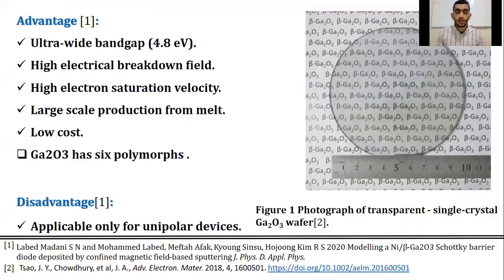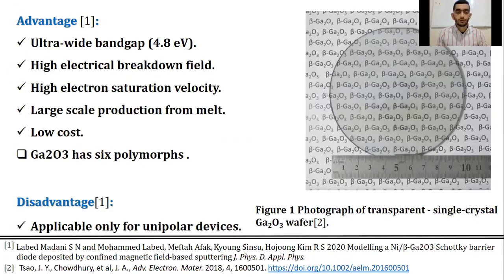Initial studies on gallium oxide were performed in the 60s of the 20th century, but then it was almost forgotten for about three decades. Intensive research in physics, devices, and applications of gallium oxide in the last decades placed that compound in the front line of ultra-wide bandgap semiconductor development. The excellent intrinsic properties of this material include an ultra-wide bandgap of about 4.8 electron volt, high electrical breakdown field, and high electron saturation velocity, combined with the availability of large-scale production from metals. In addition to its low cost compared with silicon carbide and gallium nitride, gallium oxide has six polymorphs.